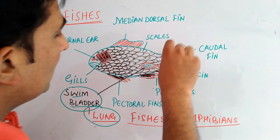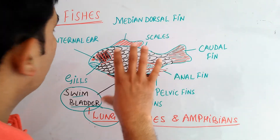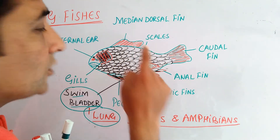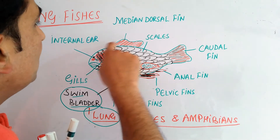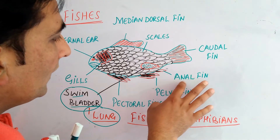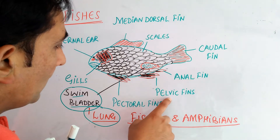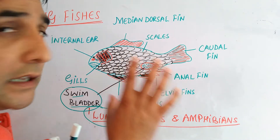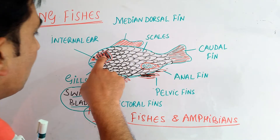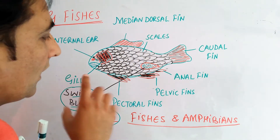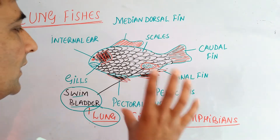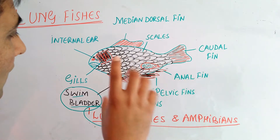This is the general body structure of the bony fishes. These are the dermal scales, which are also present in the case of lungfishes. There is a median dorsal fin, a caudal fin, an anal fin, pelvic fins, and pectoral fins — all these fins are also present in lungfishes. Gills are also present in the lungfish. So in general morphological features, lungfishes resemble the bony fishes.